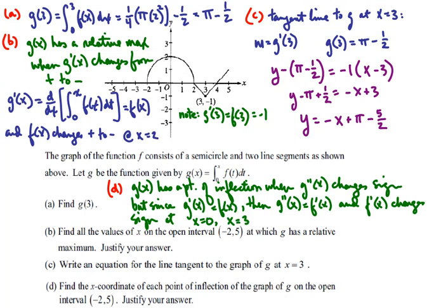Now, at x equals 2, the slope changes, but it's still decreasing, both to the left and to the right. So only at x equals 0 and x equals 3 would we have a point of inflection in the graph of g.